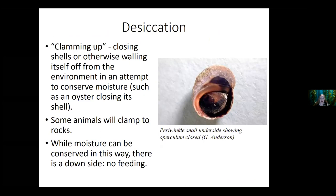Clamming up is great because the organism closes itself off from harsh environmental conditions, but there's a catch — a lot of times the organism can't feed when it's clammed up. The picture on the right shows the underside of a periwinkle snail. Snails have a structure called an operculum — similar to the operculum on a fish that covers the gills — which acts like a trap door the snail can pull closed, keeping it from drying out. Other organisms like abalone, chitons, and limpets attach themselves very firmly to a rock to help prevent drying out as well.